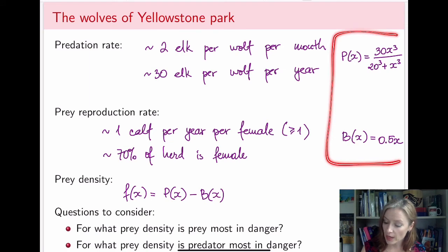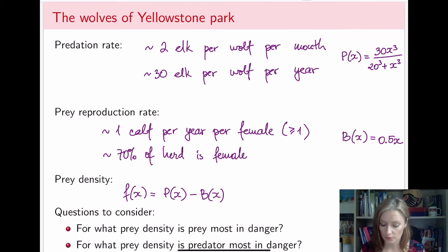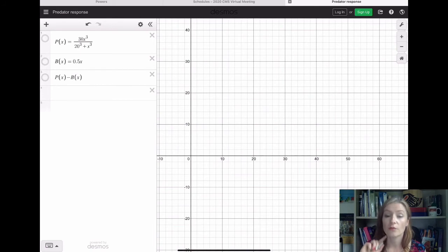But because we have specific formulas for both of these, let's take a quick look at what the graphs of those functions look like. So this is my predation rate function, a nice cubic hill function.